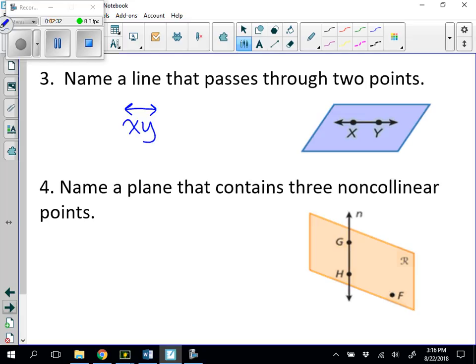Number four, name a plane that contains three non-collinear points. So on my plane, I see points G, I see points H, I see F. Now N, that's the name of the line, and R is the name of the plane. Notice there's no dots. So the only points shown are the points G, H, and F.